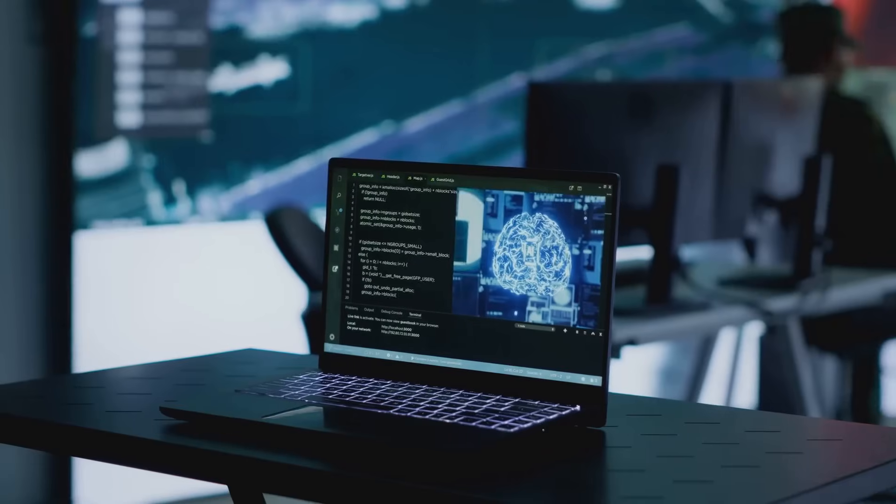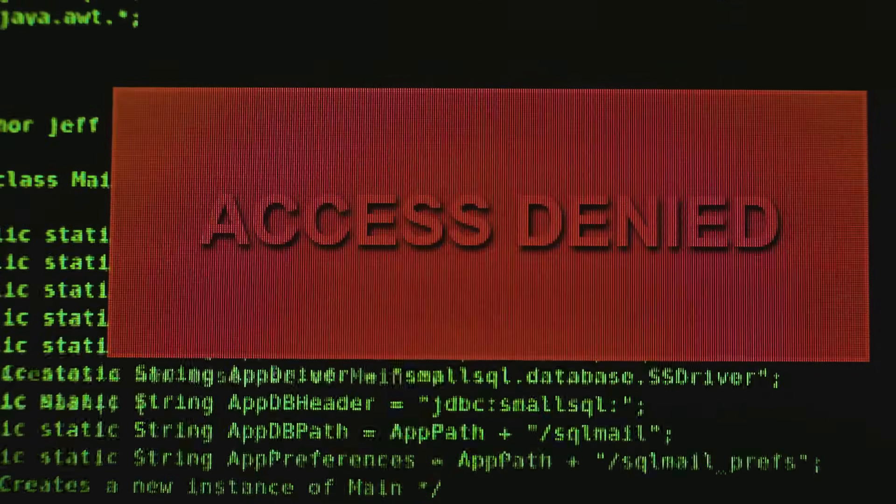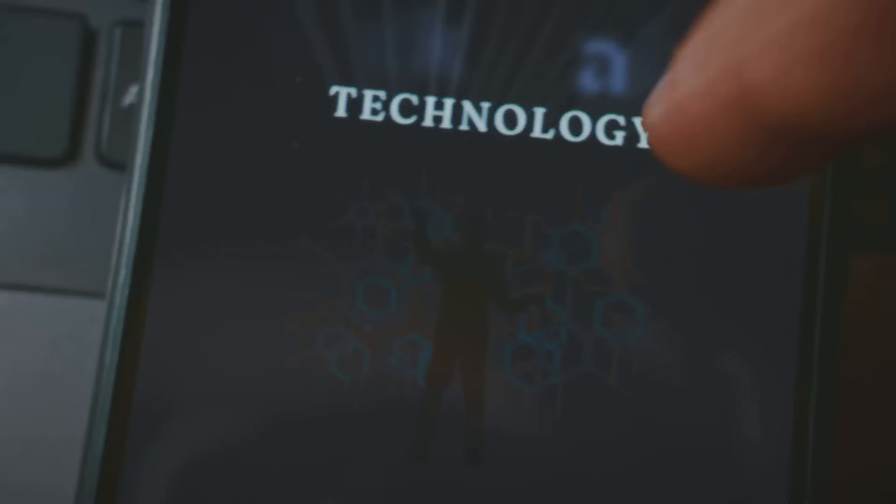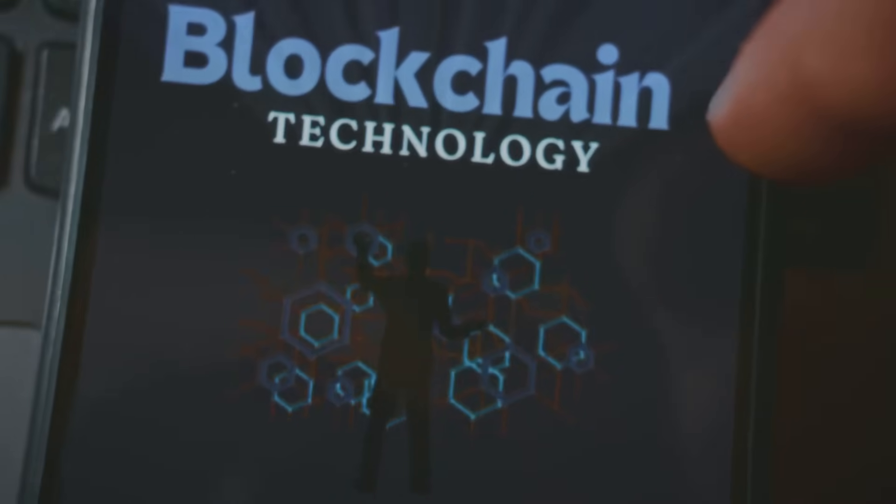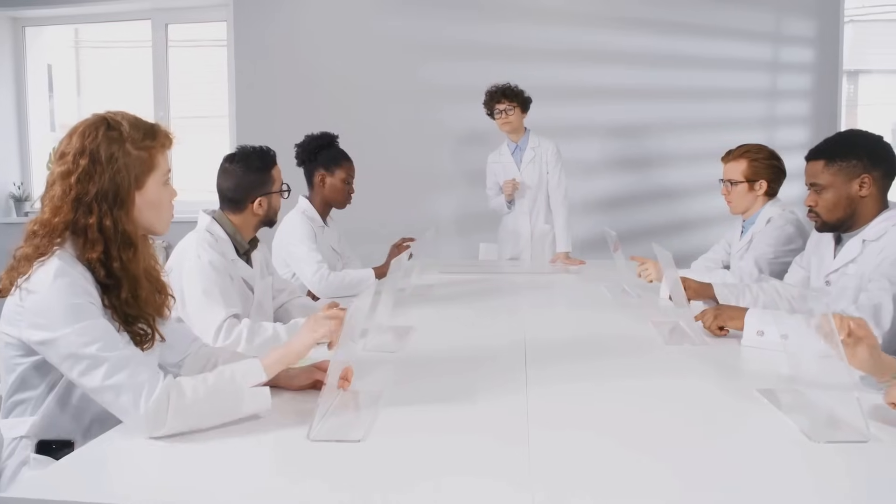Access is another big one. Traditional science hides research behind paywalls. If you're not part of a wealthy university, tough luck. DeSci says forget that. Research gets published openly, stored on blockchains visible to anyone, anywhere, anytime. No more paywalls. Knowledge becomes a public good, not a privilege.